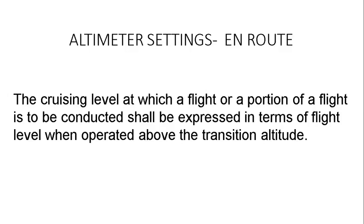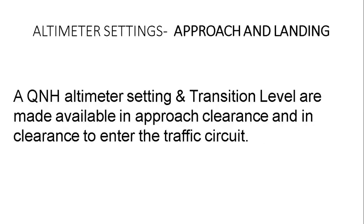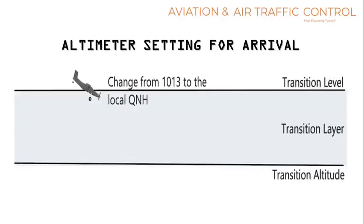Altimeter setting during approach and landing: a QNH altimeter setting and transition levels are made available in approach clearance and in clearance to enter the traffic circuit. During arrival above transition level, keep the altimeter setting at 1013.2 hectopascal. While descending passing transition level, change the standard pressure setting to QNH setting.